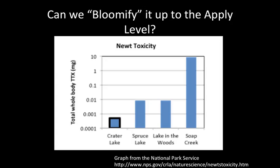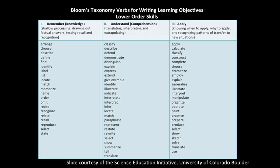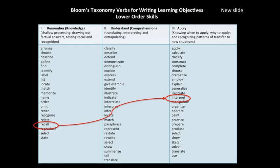The Park Service website actually has a wealth of really cool data, and it was really fun to go look for interesting data there. In Bloomifying, the game is to look over Bloom's verbs. I looked over these verbs and decided I wanted my hypothetical students to practice applying principles around how newt toxicity can evolve. I chose the verb 'interpret,' so they'll be applying biological principles through interpreting some data.